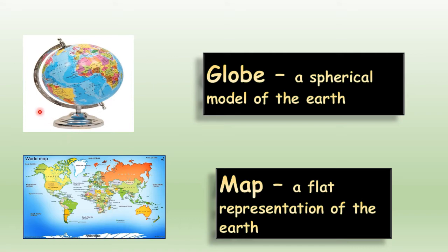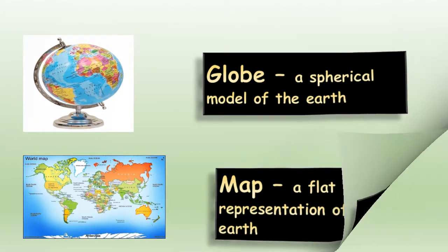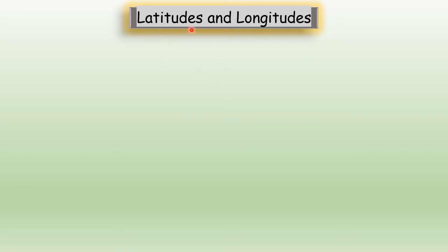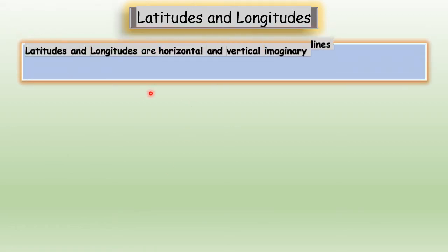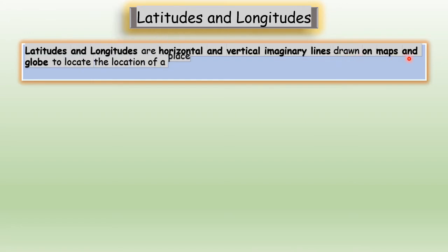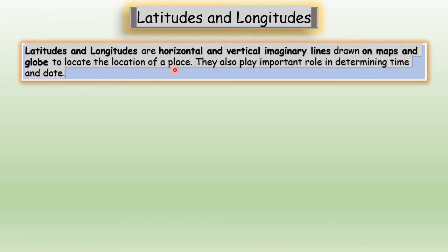We locate places on the earth with the help of imaginary lines called latitudes and longitudes. Can you see this dotted line? This is a latitude, and this line here is a longitude. These are imaginary lines on the map and globe. Latitudes and longitudes are horizontal and vertical imaginary lines drawn on maps and globes to locate the position of a place.